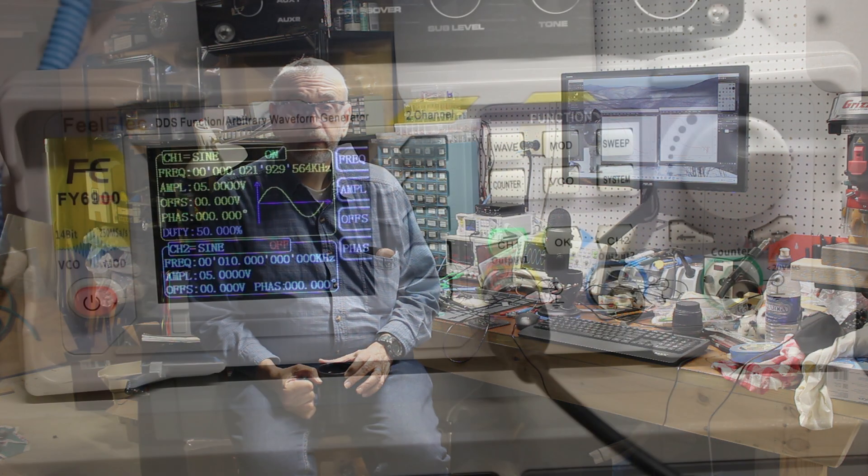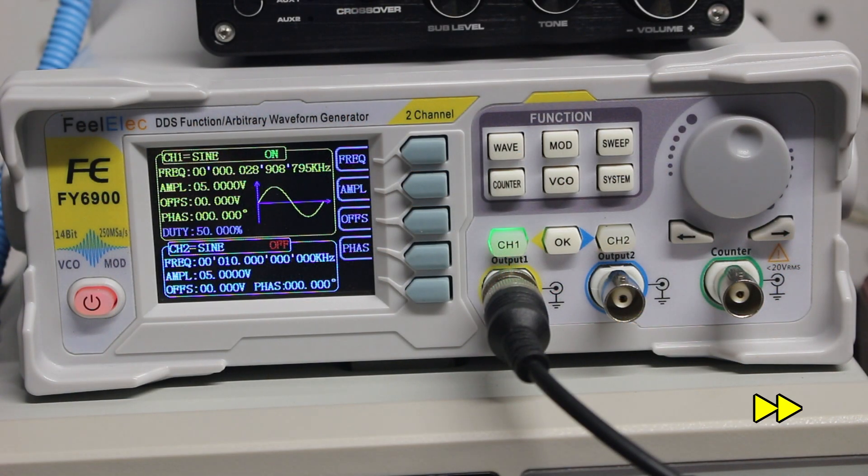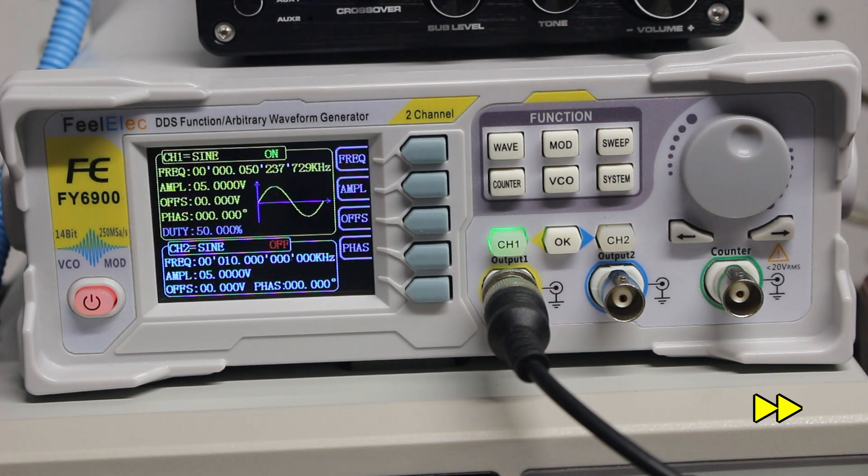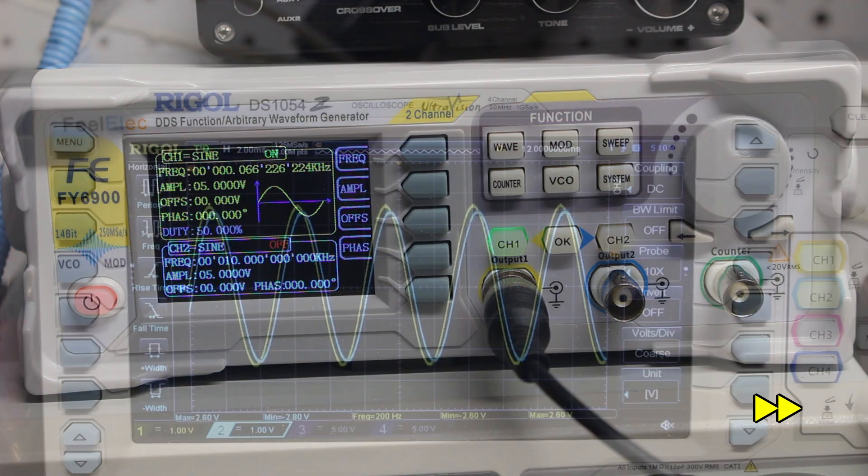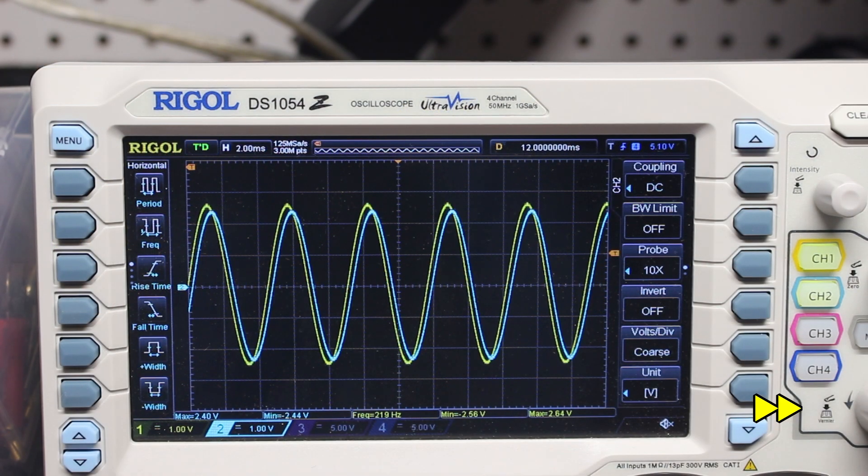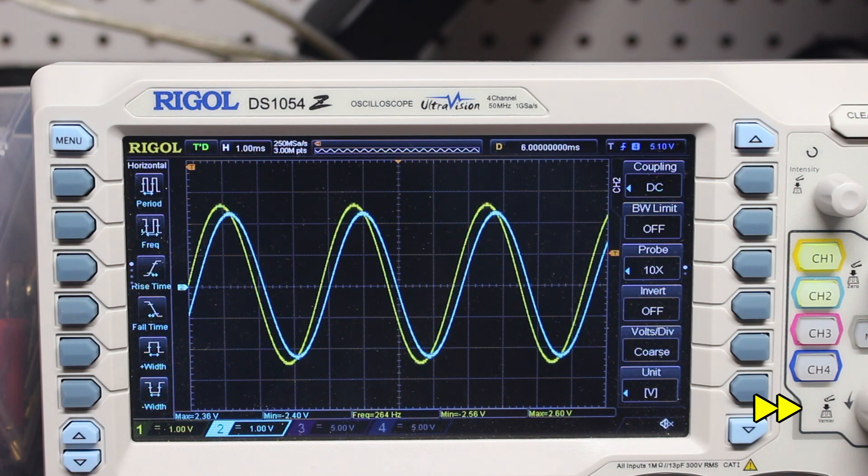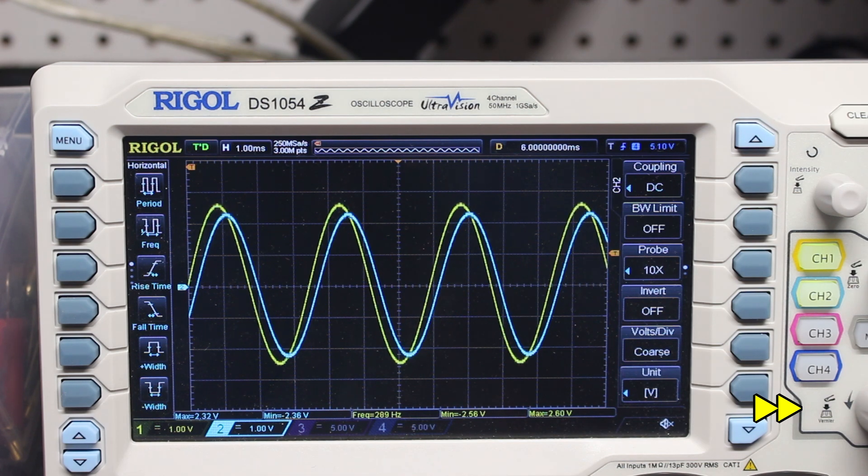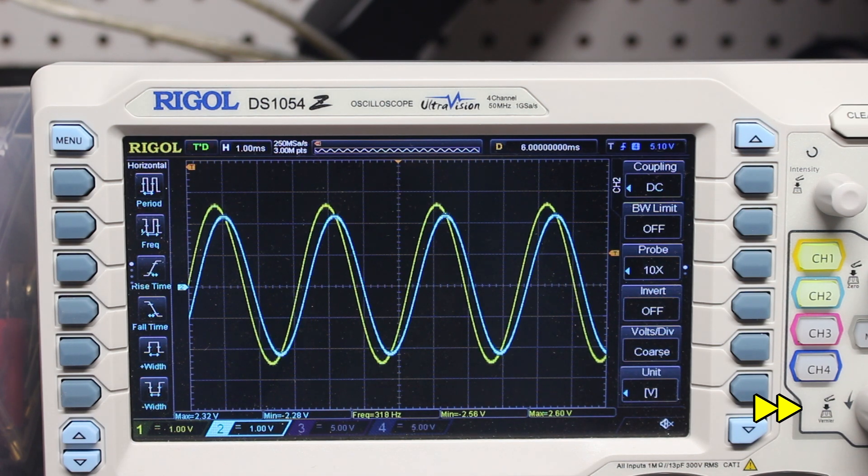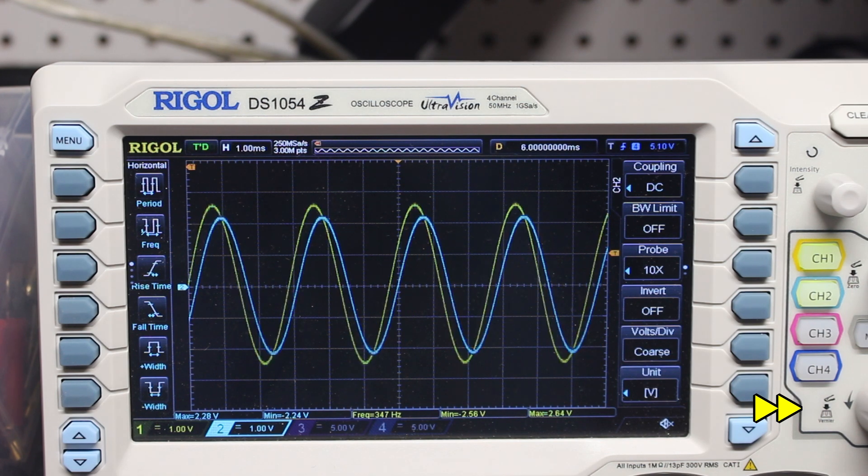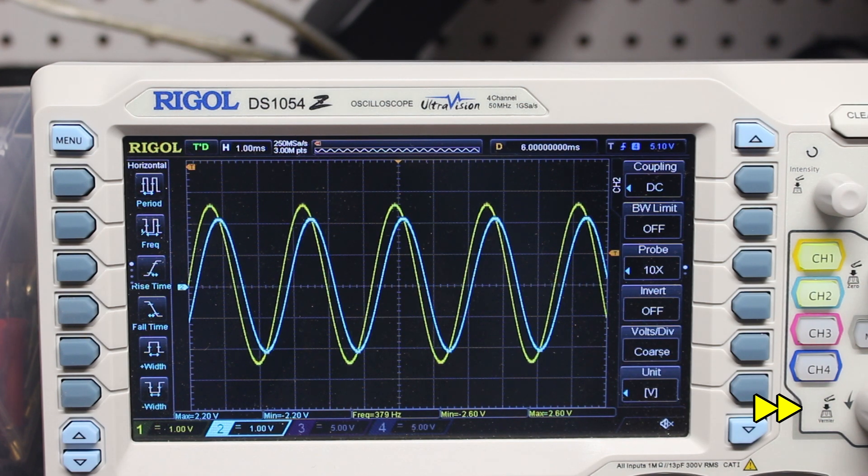I've thrown together a program that produces these plots. It works by commanding my function generator to step through a series of frequencies, while simultaneously adjusting the vertical and horizontal scales of my oscilloscope to frame the waveform. That gives me the lowest possible quantization error, since I can scale the wave to more or less fill the dynamic range of the scope.